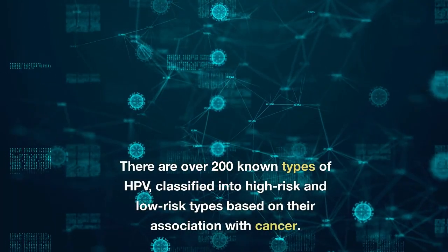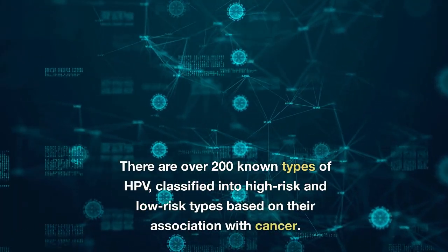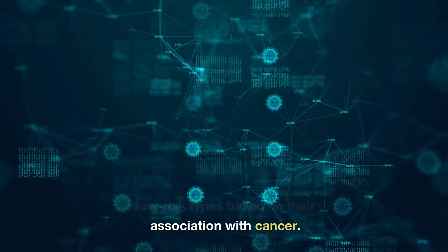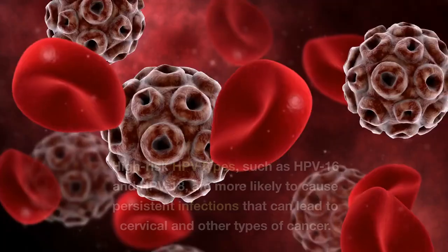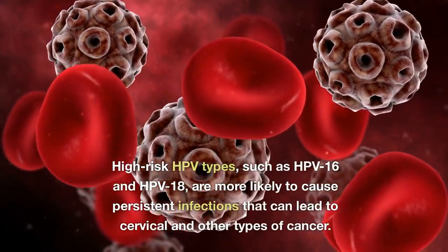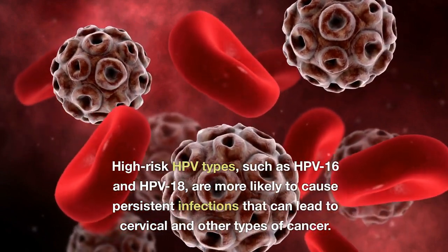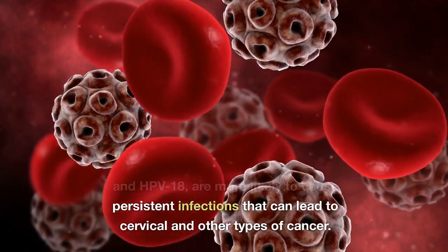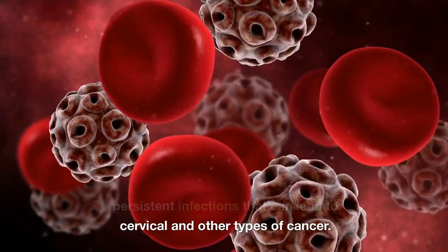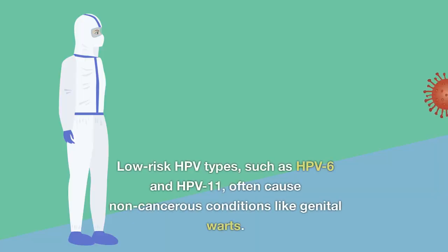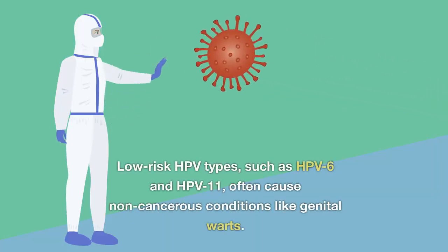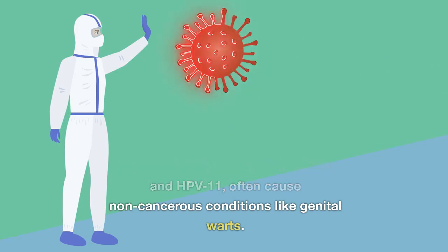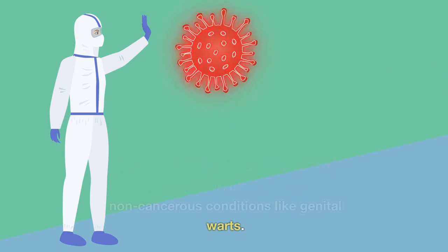There are over 200 known types of HPV, classified into high-risk and low-risk types based on their association with cancer. High-risk HPV types, such as HPV-16 and HPV-18, are more likely to cause persistent infections that can lead to cervical and other types of cancer. Low-risk HPV types, such as HPV-6 and HPV-11, often cause non-cancerous conditions like genital warts.